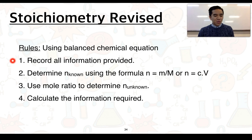Going through this, the first rule, we just want to record all the information provided using our balanced chemical equation. Second rule, we want to determine the number of moles of our known, either using the formula n equals m over M, or n equals c times v. Third rule, we then use the mole ratio to determine the number of moles of our unknown. And then finally, we just calculate the information that is being asked.